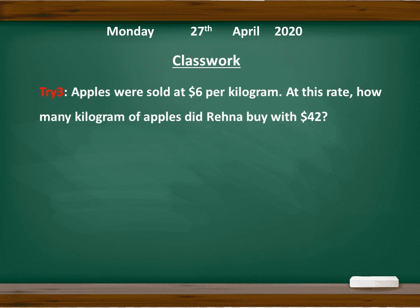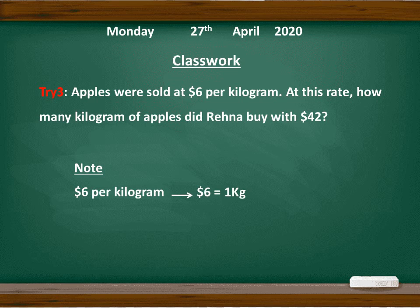Now go to try three: Apples were sold at six dollars per kilogram. At this rate, how many kilograms of apples did Greenha buy with 42 dollars? Take note: six dollars per kilogram means six dollars in one kilogram. Before you find 42 dollars, you have to know one dollar first. When you find the answer for one dollar, you can find 42 dollars — so it means 42 times of one dollar. So the word 'times' means which operation? You can find and choose to do it by yourself.